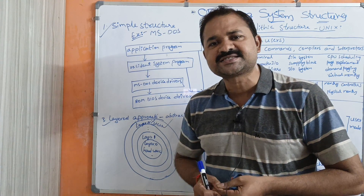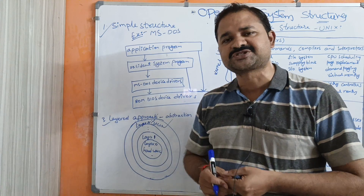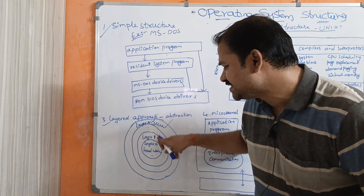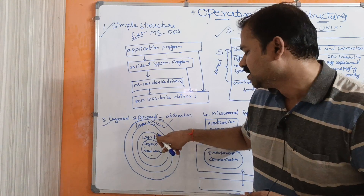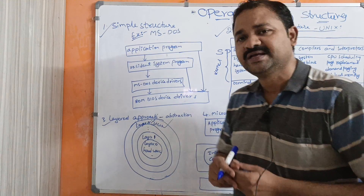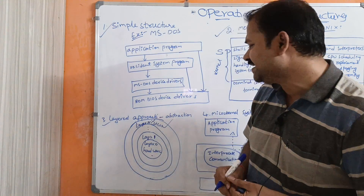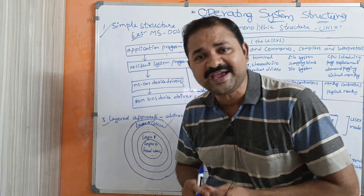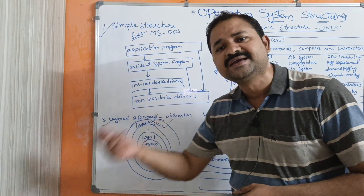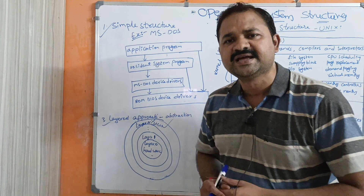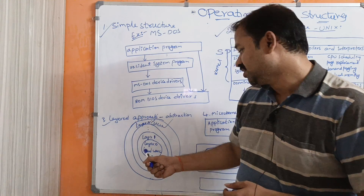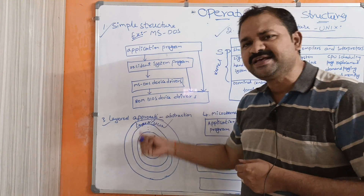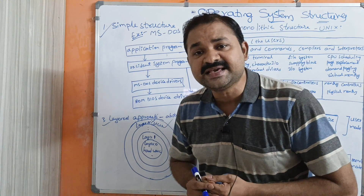Each layer uses the services provided by its lower layers and provides those services to its upper layers. For example, layer 1 uses the services of layer 0 and provides them to layer 2. The major advantage is that layer N — the topmost layer — cannot access layer 0 (hardware) directly, since layer N can access only layer N-1, and layer N-1 can access only layer N-2. This approach is also very simple to construct and debugging is very easy.